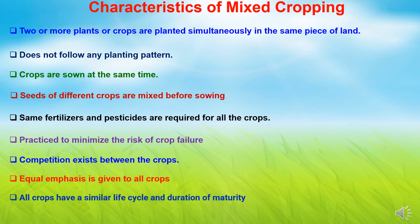Now let's study the characteristics or features of mixed cropping. Mixed cropping is a cropping technique in which two or more crops are planted simultaneously on the same piece of land. In this cropping system, there is no set pattern such as row spacing or plant spacing, and the crops are sown randomly by mixing the seeds. All crops are sown at the same time.